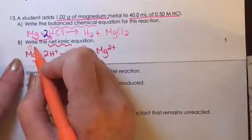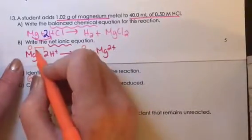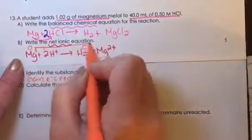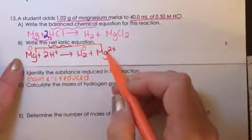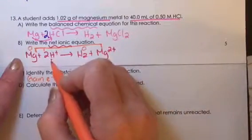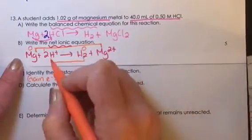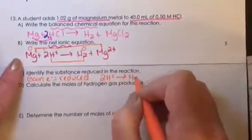So magnesium went from 0 to plus 2, which would be a loss of electrons. So magnesium was oxidized. Hydrogen went from plus 1 to 0, which means it gained electrons, and that is the species that was reduced.